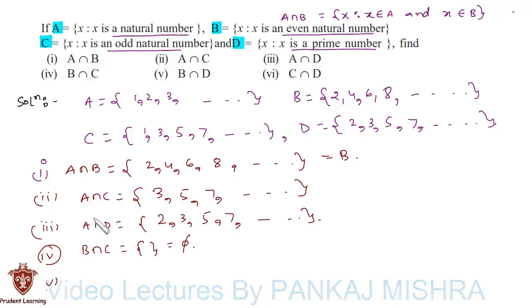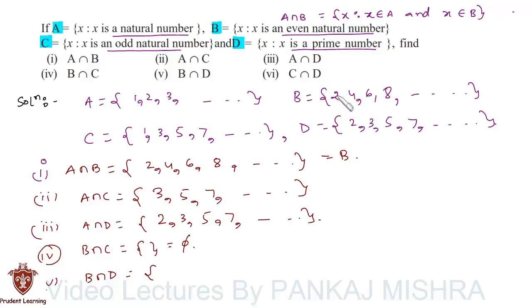In the fifth section we have to find B intersection D. The only common element between set B and set D is 2, so B intersection D is the set containing just the element 2.